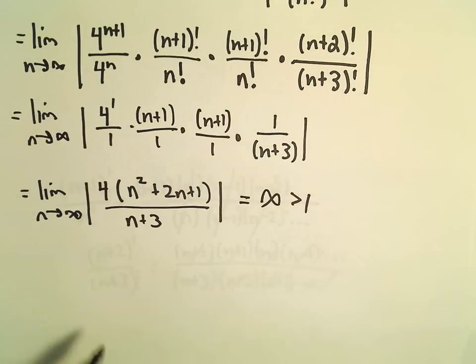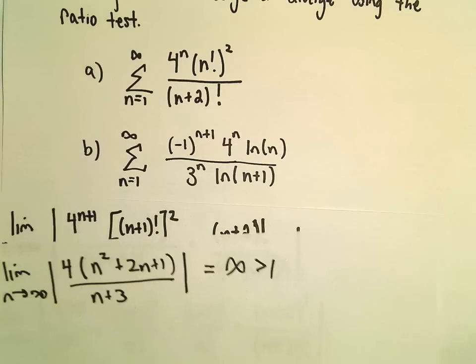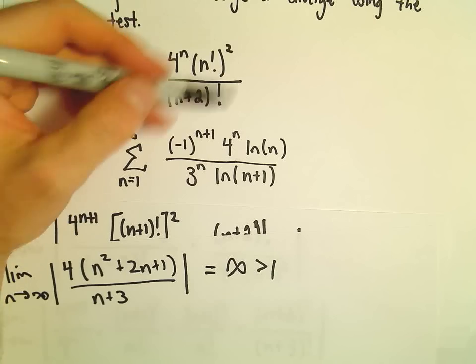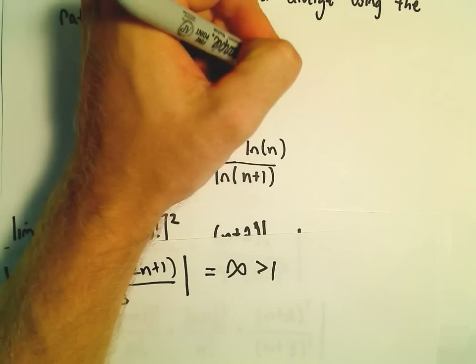Well, that's certainly greater than 1. And when it's greater than 1, the ratio test tells us that the original series will diverge.